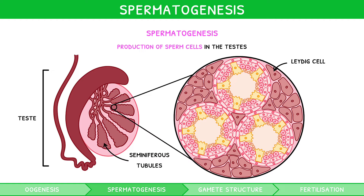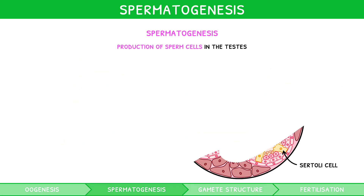The outer layer of each seminiferous tubule is known as the germinal epithelium, and it contains Sertoli cells, also known as nurse cells. Like oogenesis, spermatogenesis is considered a six-stage process.